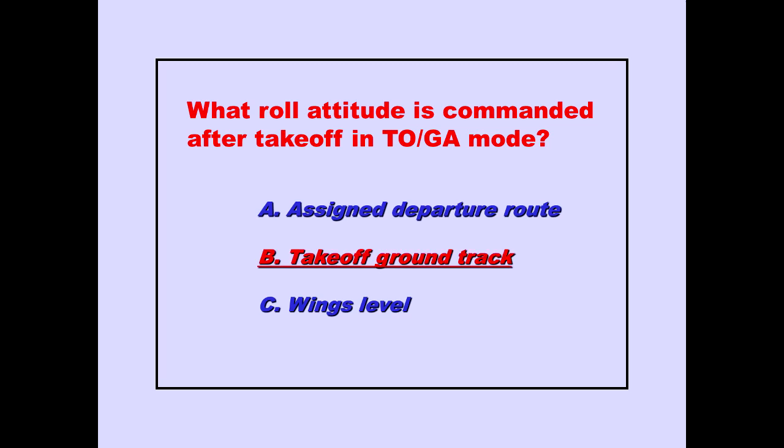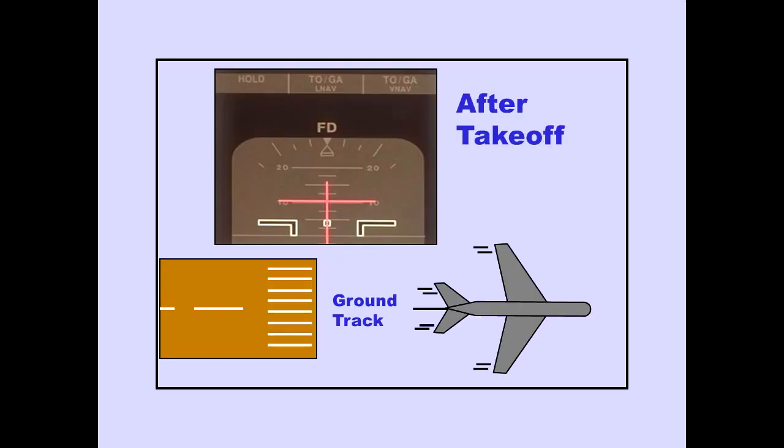Answer B is correct. The flight director commands a heading to maintain the ground track which existed during the takeoff.